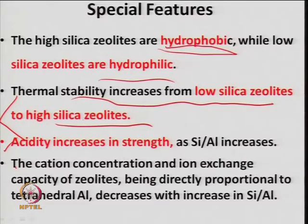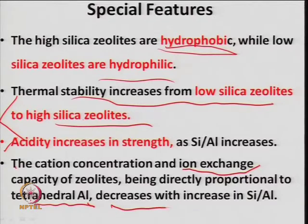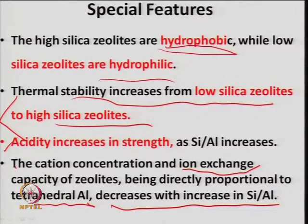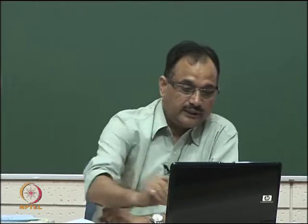Cation concentration and ion exchange capacity of zeolite is directly proportional to the tetrahedral aluminum and decreases with increasing silicon-to-aluminum ratio. When Si/Al ratio increases, exchange capacity decreases because aluminum provides electronegativity — silicon is 4+ and aluminum is 3+. When connected in the framework this changes the electronegativity, and ion exchange capacity decreases when Si/Al ratio is high.